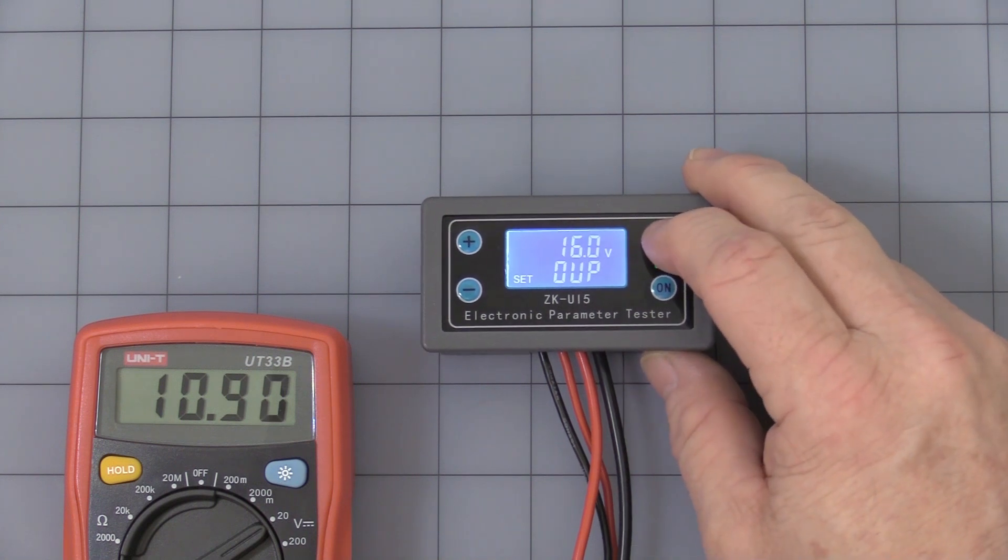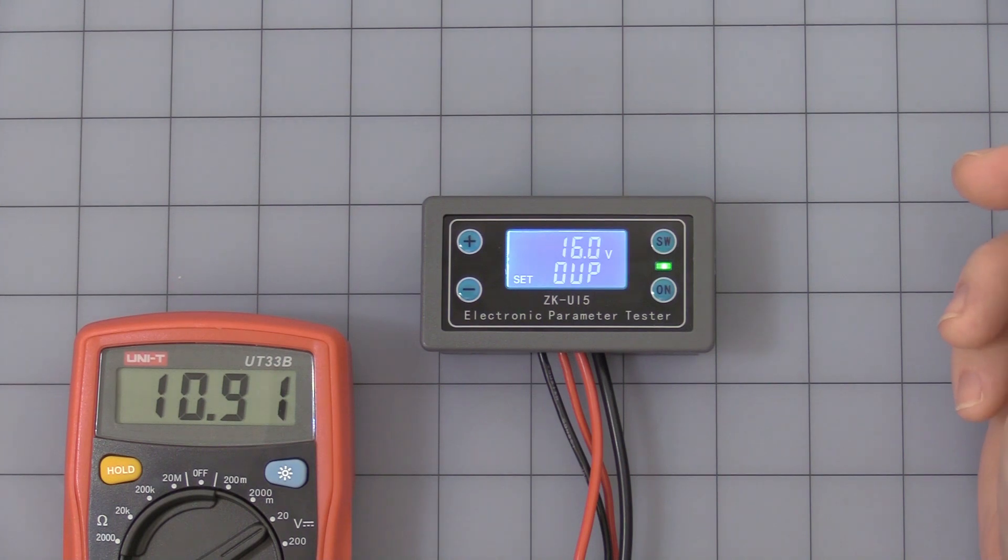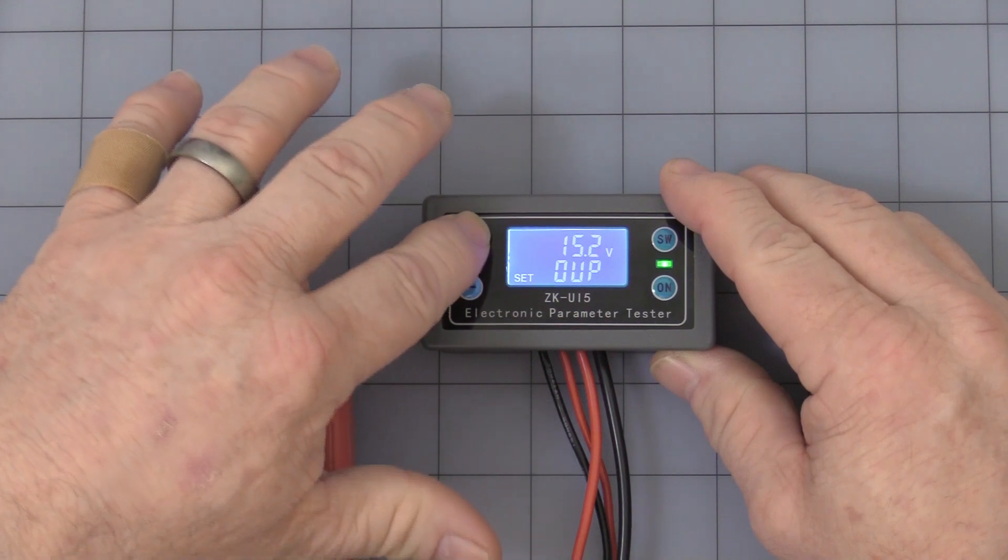Okay, that's low voltage. Press the SW button again. This is over voltage. It comes factory set at 38 volts. I just lowered it to 16 just so we can show it in operation here in a moment.